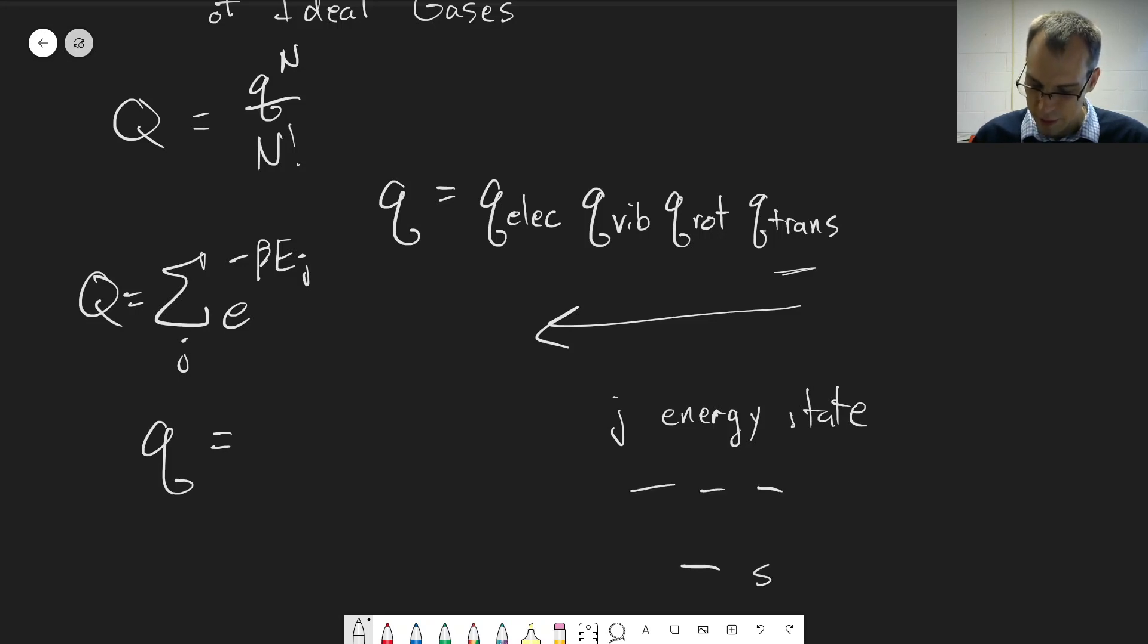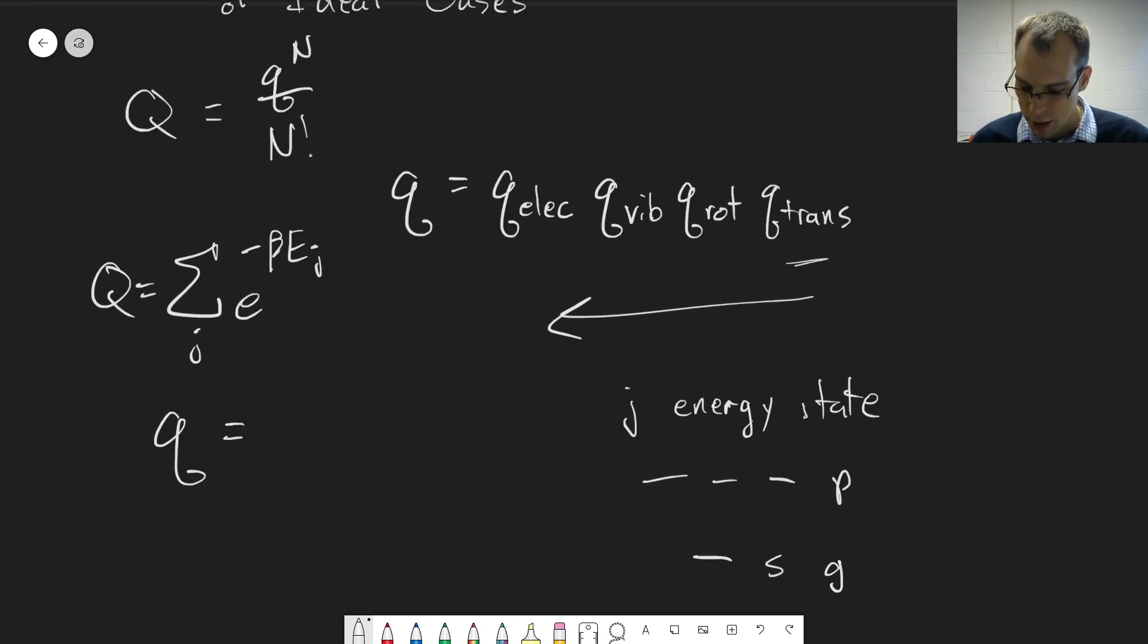For an s orbital, there's only one of them. But for a p orbital, we have three different possibilities. So we would say that the degeneracy of the s orbitals is equal to one, whereas the degeneracy for the p orbitals is equal to three, because there's three different orbitals that have the exact same energy.